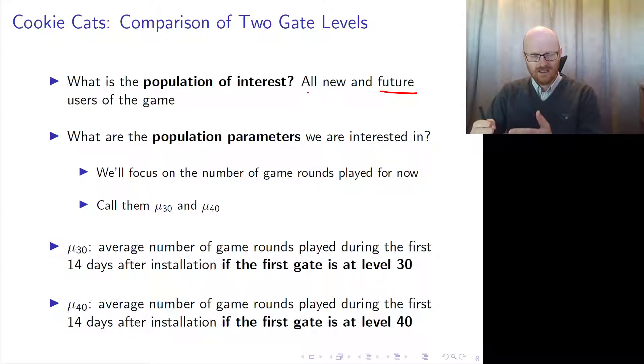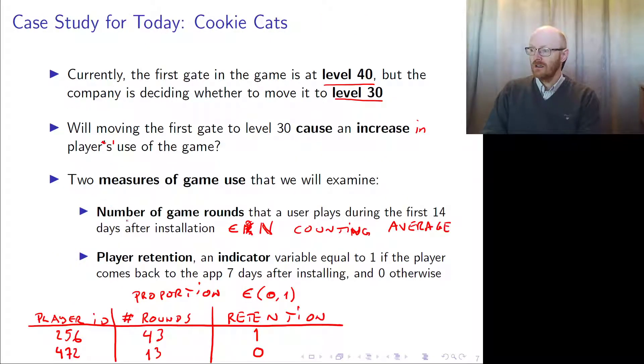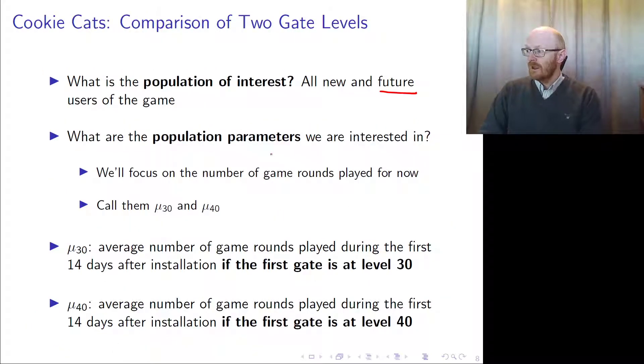That's why we would like for our samples to be taken at basically the same period of time. The population parameters we are interested in are both the number of game rounds and the player retention, but we'll focus on game rounds for now.